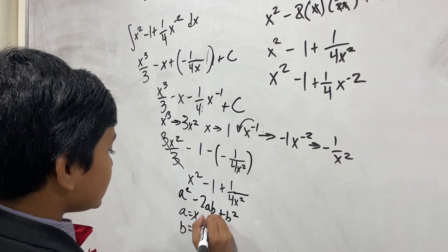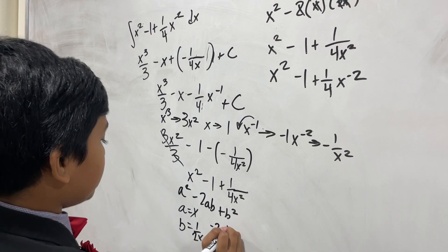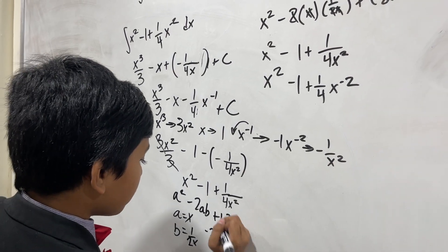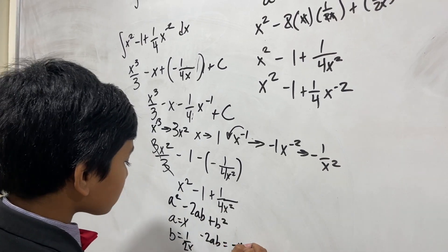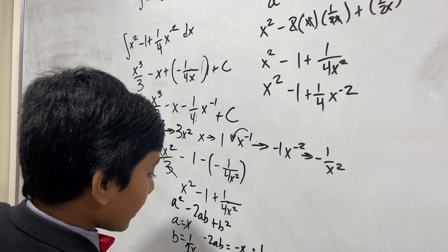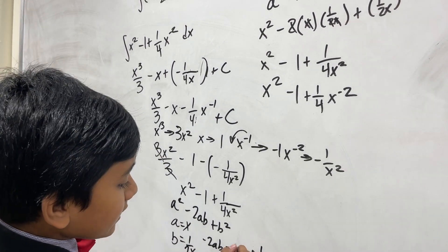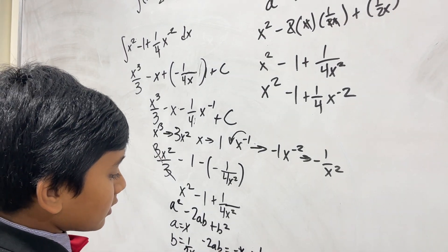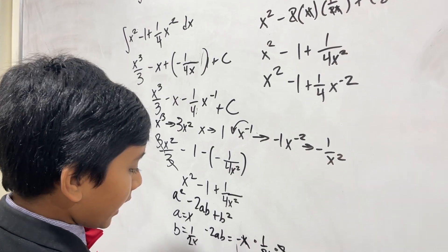Just to test it, minus 2ab is equal to minus x times 1 over 2x times 2, and this cancels out, this cancels out, this cancels out, minus 1.